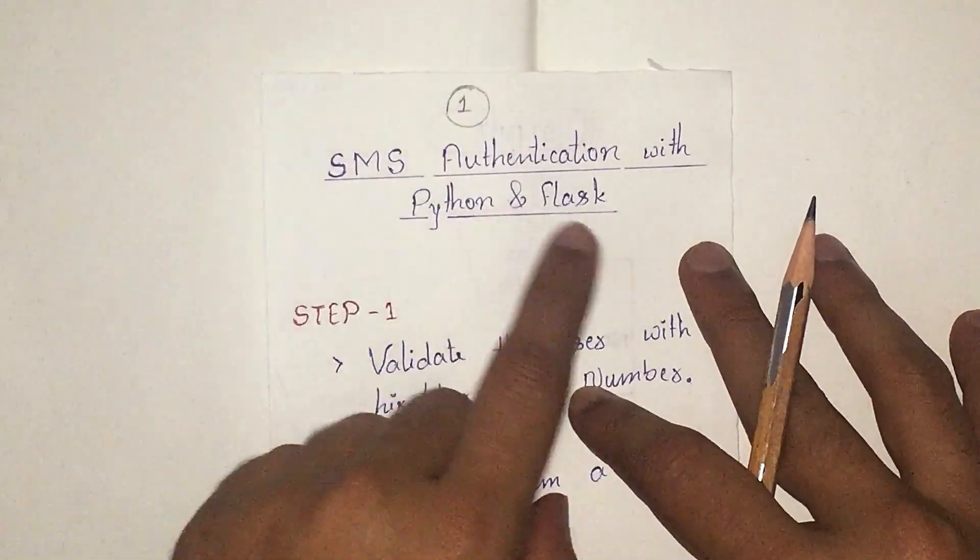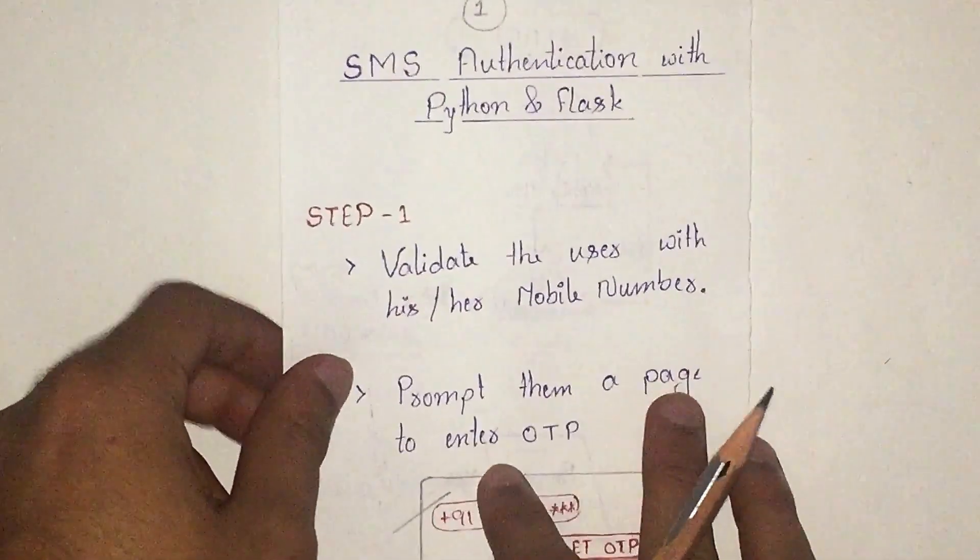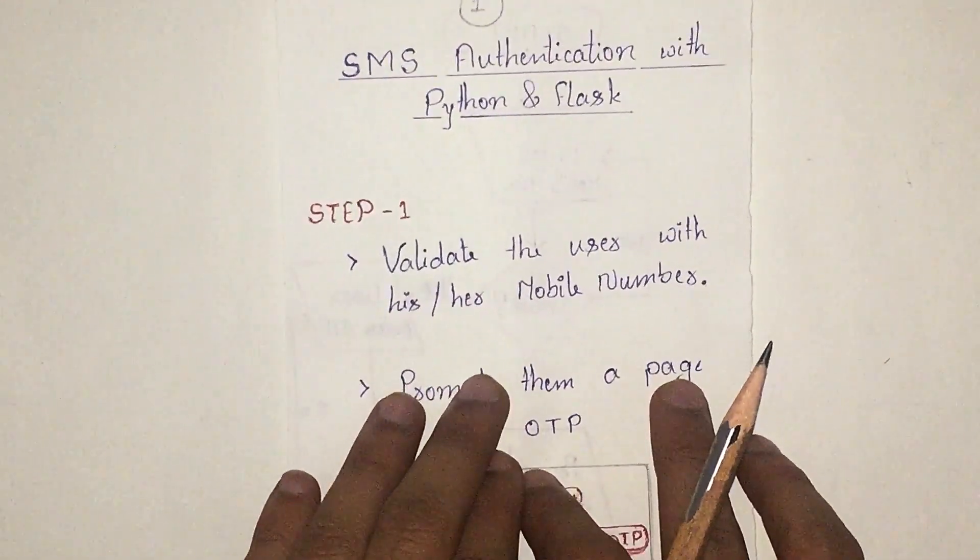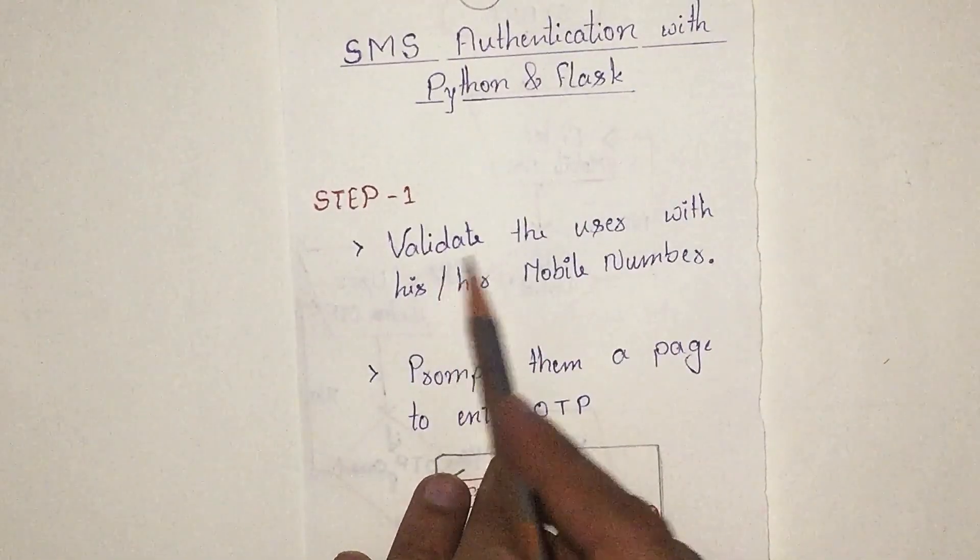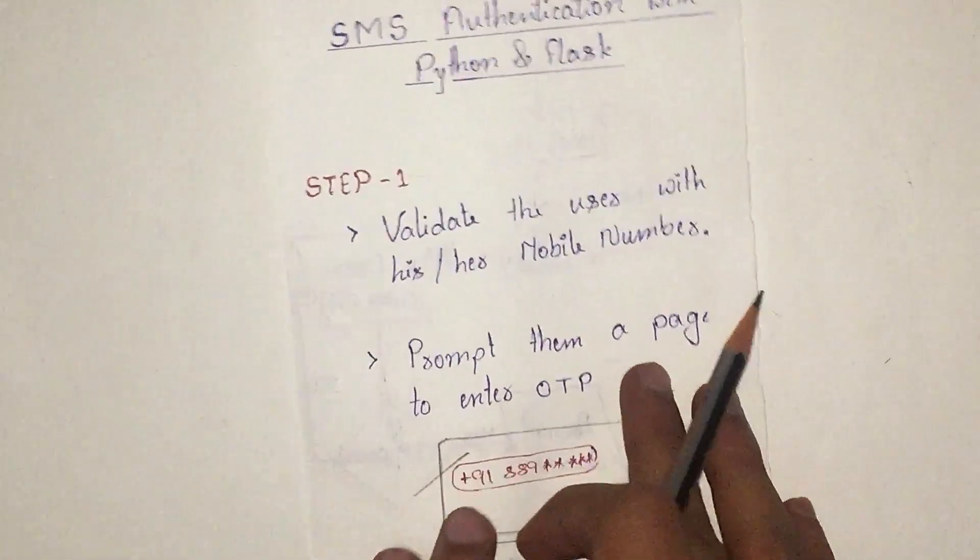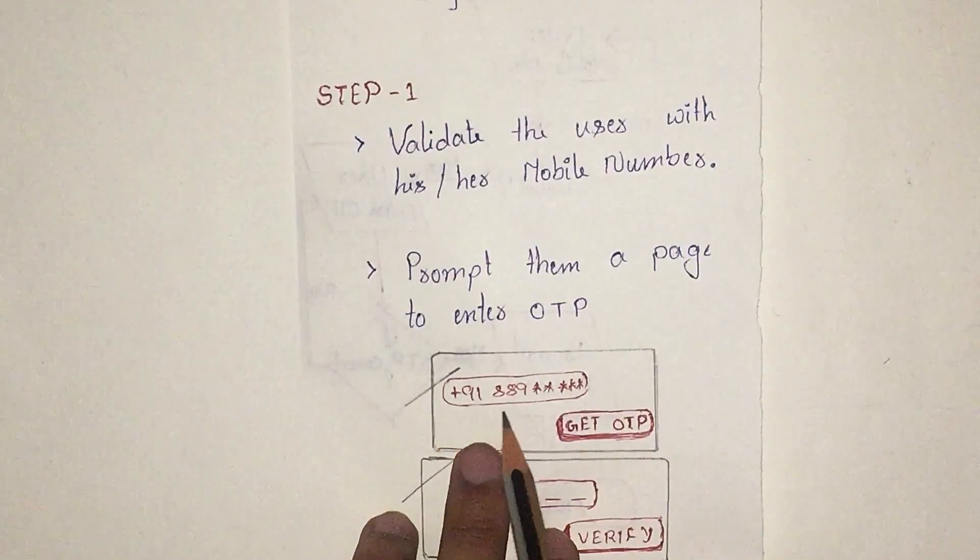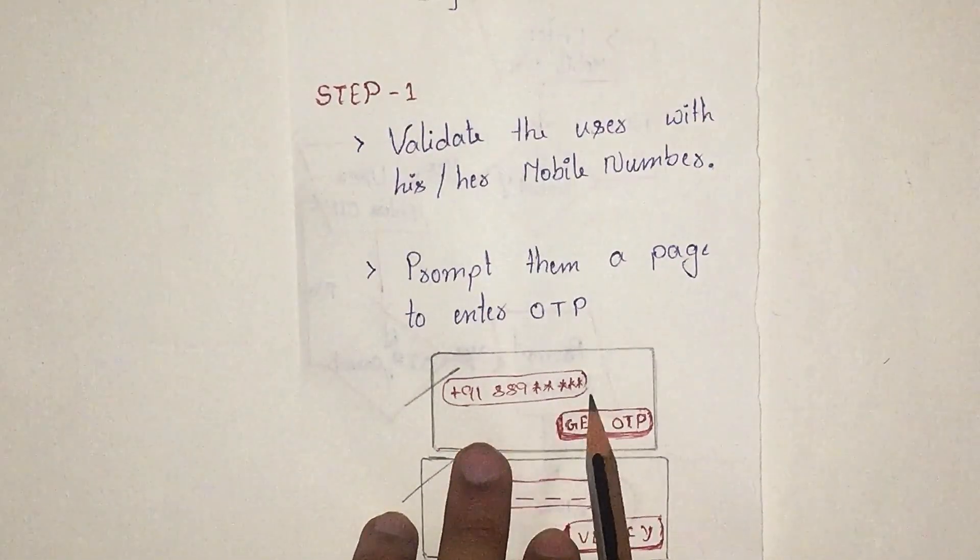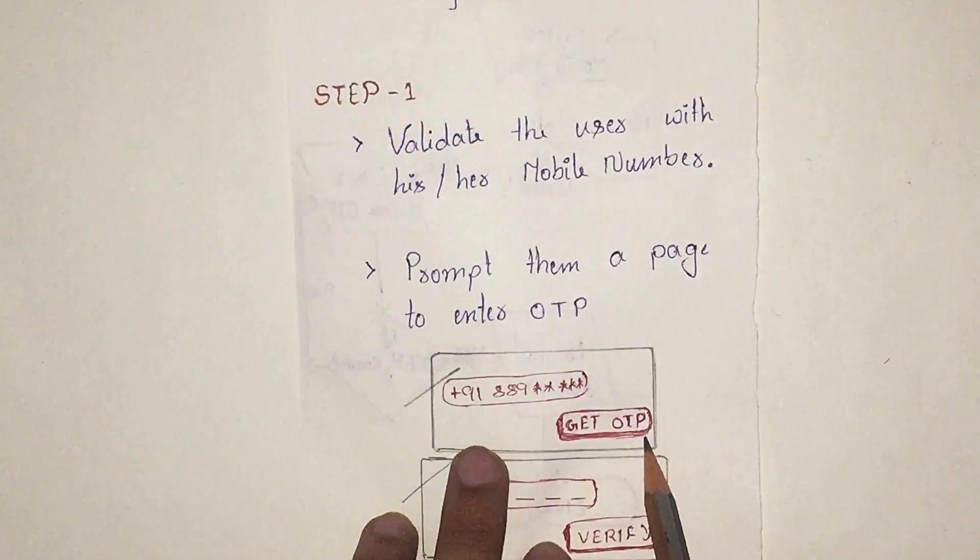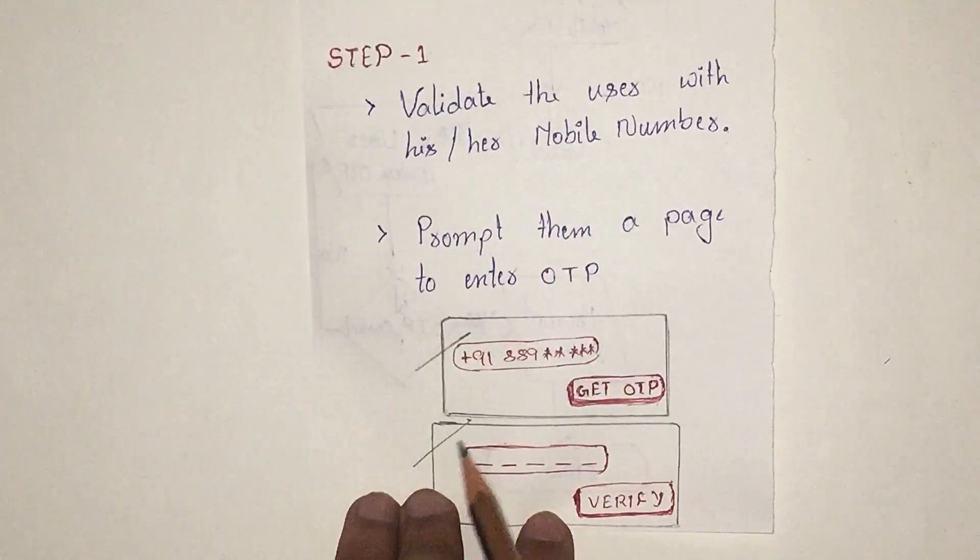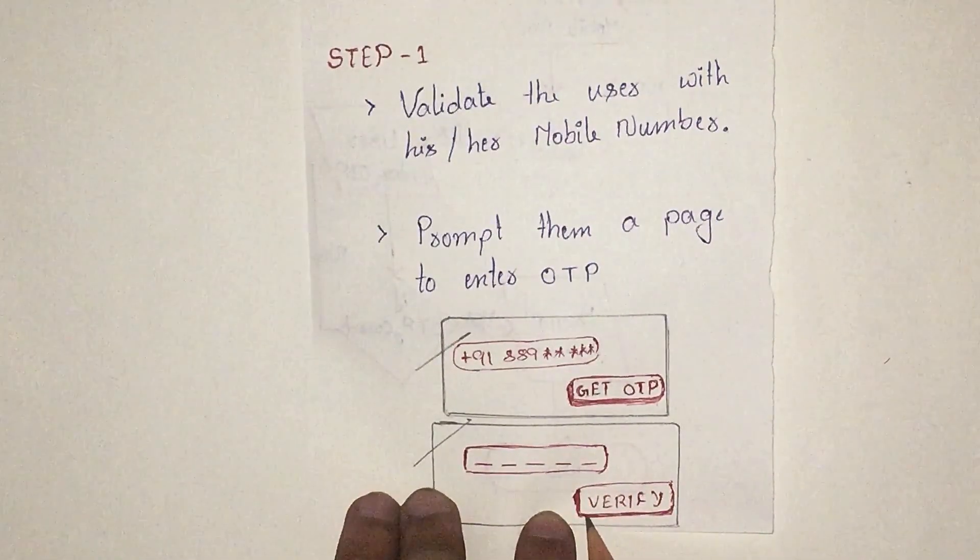Let's get into the topic. Step one: validate the user with mobile number. We need to prompt a page so that the user enters the mobile number. As you can see on my page here, the user enters the mobile number and clicks on get OTP. Then we need to pop up a page saying enter a six-digit OTP that has been sent to your mobile number and a verification button.